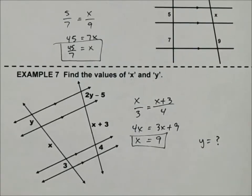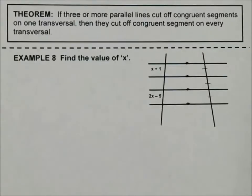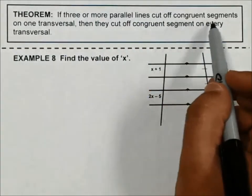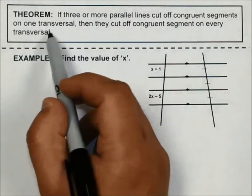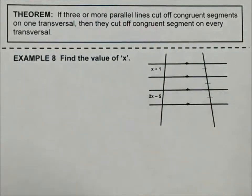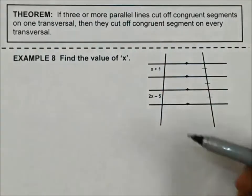If you want to check, you can ask me and I will tell you in class. This last theorem says that if three or more parallel lines cut off congruent segments of one transversal, then they cut off congruent segments on every transversal. So again, I'm going to use an example to illustrate this theorem.